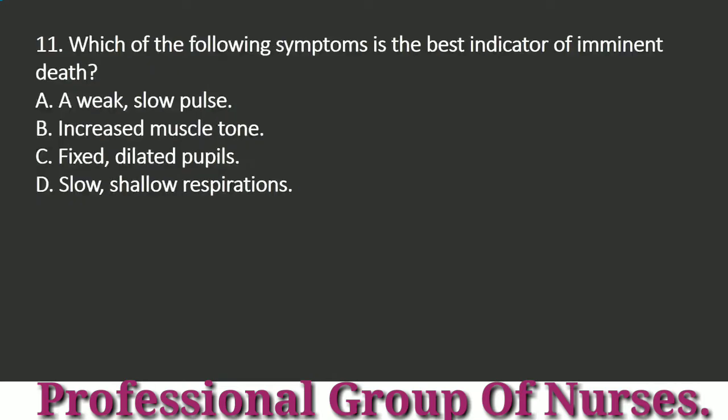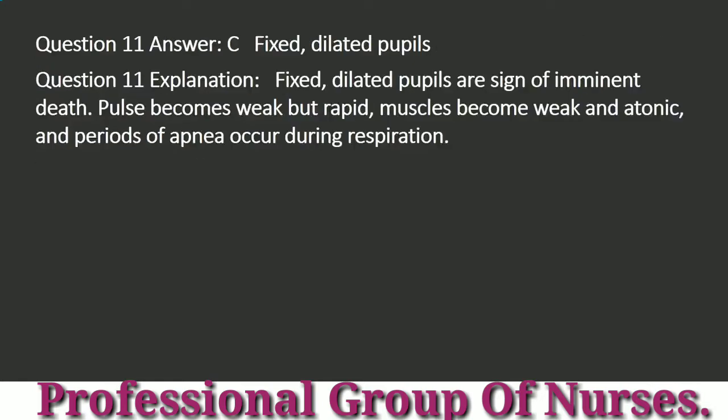Question 11: Which of the following symptoms is the best indicator of imminent death? a. A weak, slow pulse. b. Increased muscle tone. c. Fixed, dilated pupils. d. Slow, shallow respirations. Answer: c. Fixed, dilated pupils. Explanation: Fixed, dilated pupils are a sign of imminent death. Pulse becomes weak but rapid, muscles become weak and atonic, and periods of apnea occur during respiration.